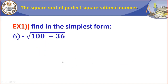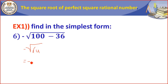Exercise number 6: negative root of (100 minus 36). The negative stays outside. I work under the root: 100 minus 36 equals 64. I want the negative square root of 64. The square root of 64 equals 8, because 8 power 2 means 8 times 8 equals 64. So the answer is negative 8.